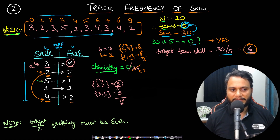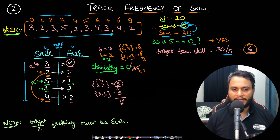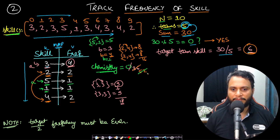Next, a = 5. Target = 6, so b = 6 - 5 = 1. Check: frequency of 5 equals frequency of 1, so one team of (5, 1) is formed. Product = 5×1 = 5. Adding 5 to the running total gives 57.